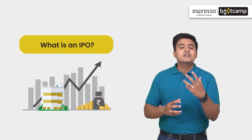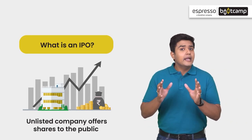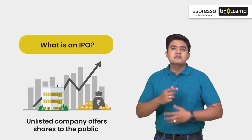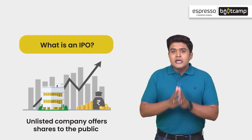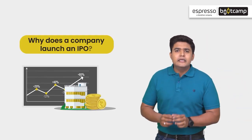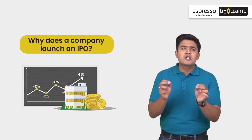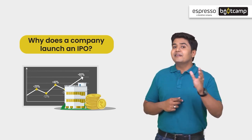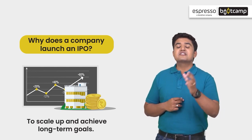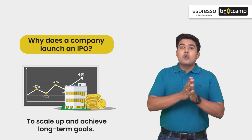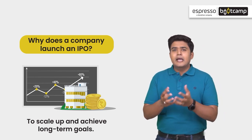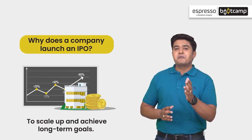Let's understand what an IPO ultimately is. By launching an IPO, an unlisted company will debut in the stock market by offering its shares to the public. IPO is a part of the financial market. A business can only grow to a limited extent through the financial backing of its owners. For it to achieve its long-term goals, it needs to scale up. This requires capital, and here's where the primary market comes into the picture.